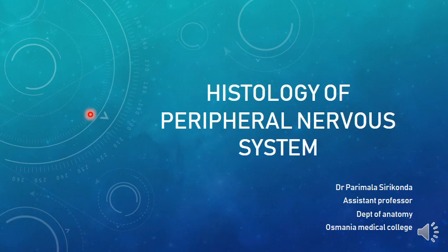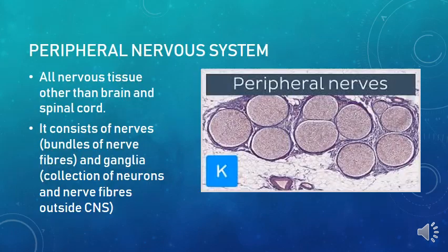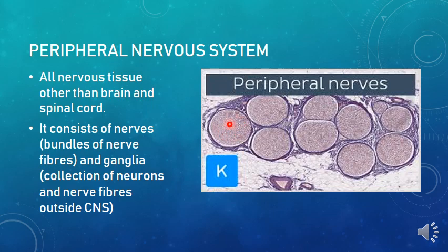Good morning students. Today we are going to discuss the histology of the peripheral nervous system. All the nervous tissue other than the brain and the spinal cord is called the peripheral nervous system. This consists of nerves, which are bundles of nerve fibers. In this image you can see bundles of nerve fibers - the small darkened areas are the nerves, and together they form a peripheral nerve.